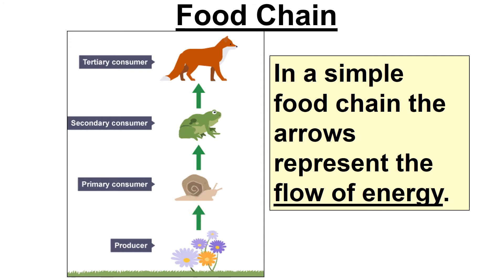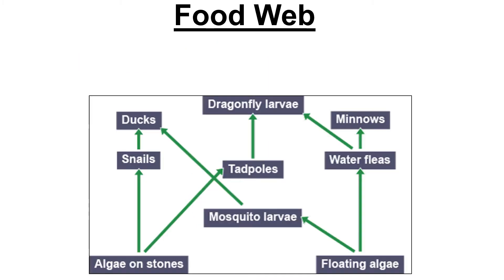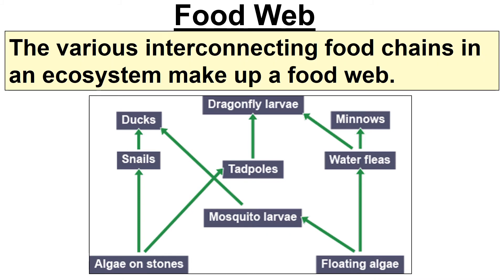This is a food web. A food chain is simple, but life isn't as simple as that — you're going to have lots of different living things within your habitat. So in a food web, you put the food chains together. If you look here: algae and stones → snails → ducks is one food chain; algae and stones → tadpoles → dragonfly larvae is another. You put them together to make your food web.